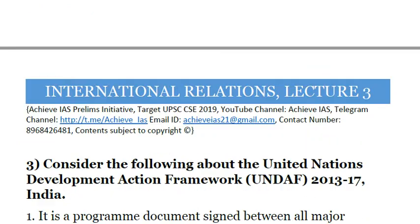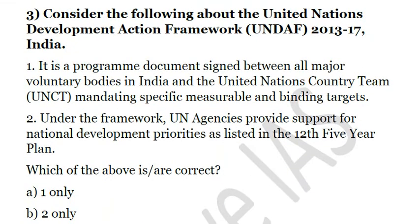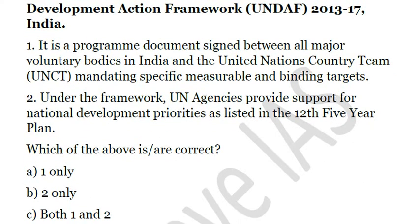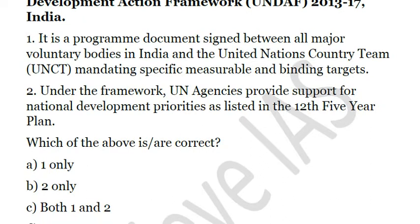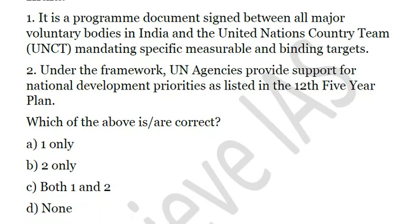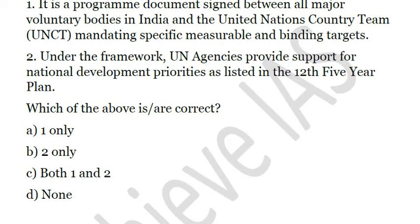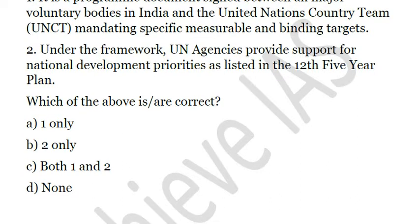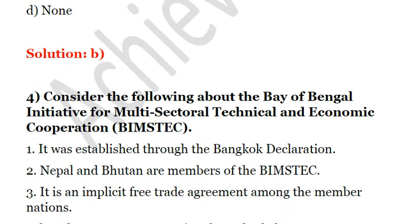The next question is: Consider the following about United Nations Development Action Framework 2013-17 India. First, it is a program document signed between all major voluntary bodies in India and the United Nations country team mandating specific, measurable and binding targets. Second, under the framework, UN agencies provide support for national development priorities as listed in the 12th Five-Year Plan. Only the second statement is correct, so the solution is B.